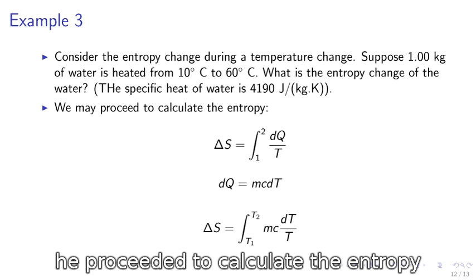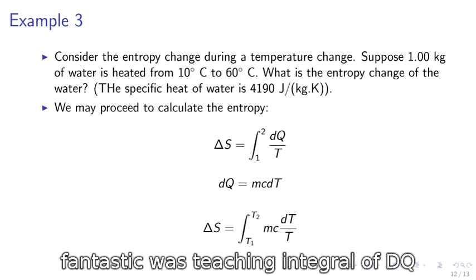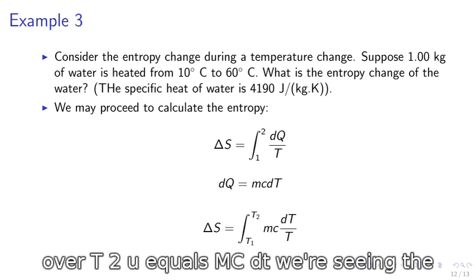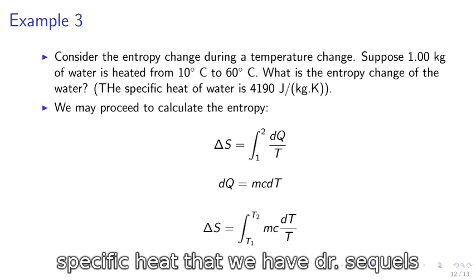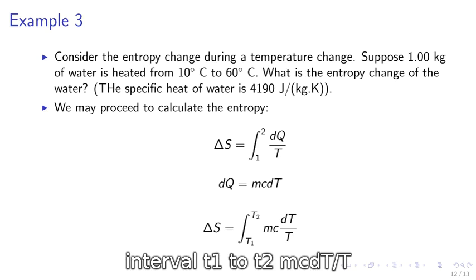We proceed to calculate the entropy. Delta S equals the integral of dQ over T. dQ equals mc dT where c is the specific heat. Thus we have delta S equals the integral from T1 to T2 of mc dT over T.